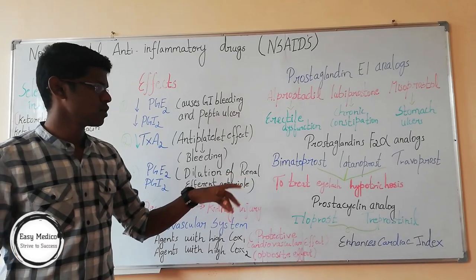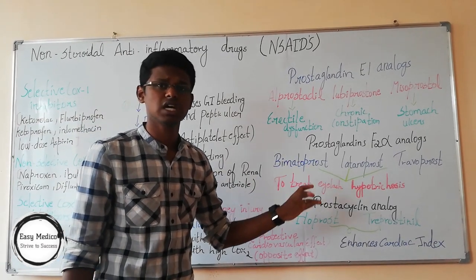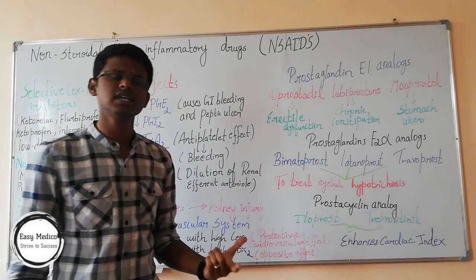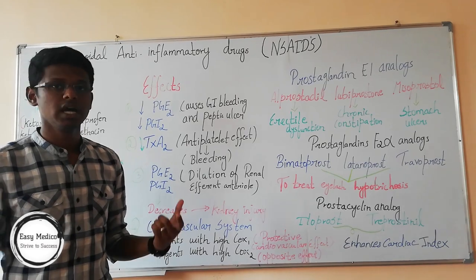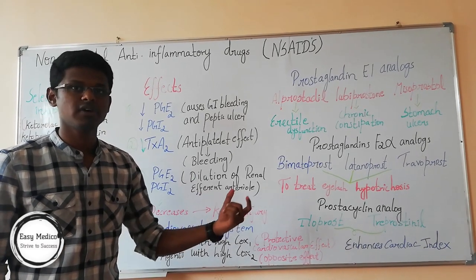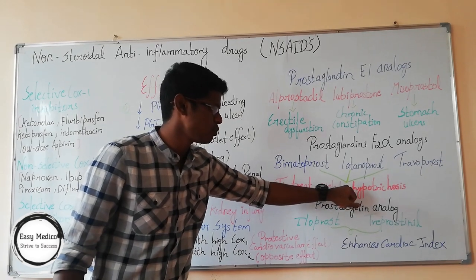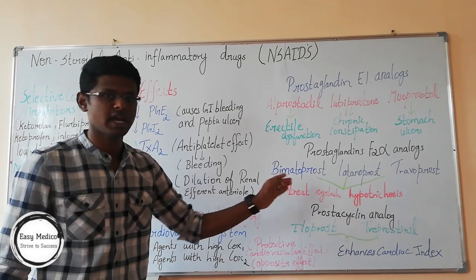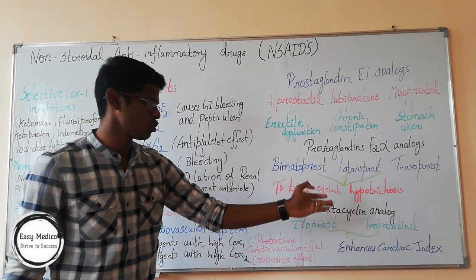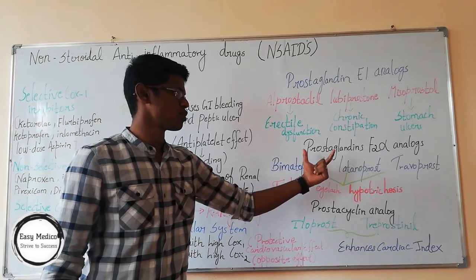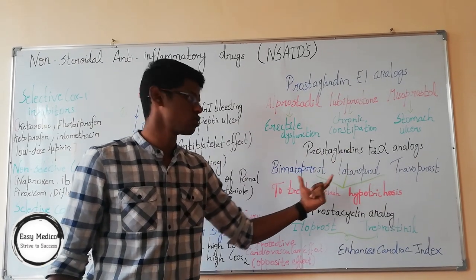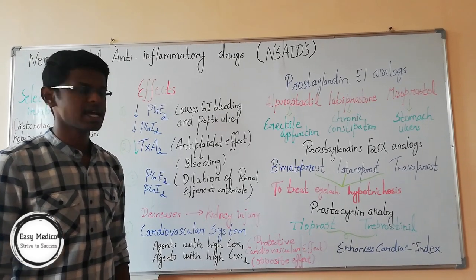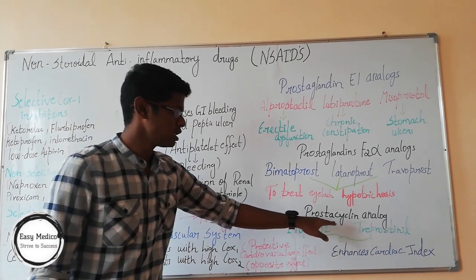These have various uses. A common use is to treat eyelash hypotrichosis. What is eyelash hypotrichosis? Hypo means decrease, and trichosis refers to eyelash — so it means a decrease or loss of eyelashes. These prostaglandin F2 alpha drugs are used to treat this disorder.